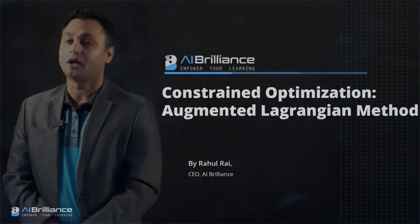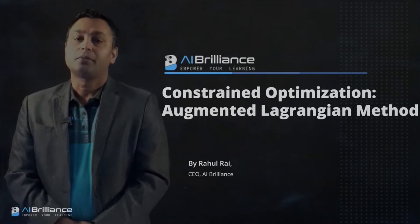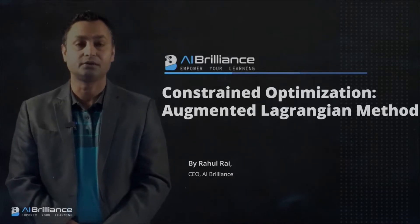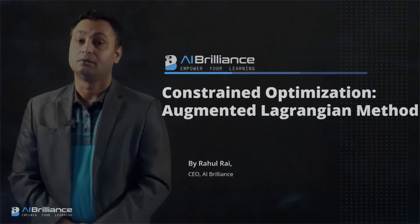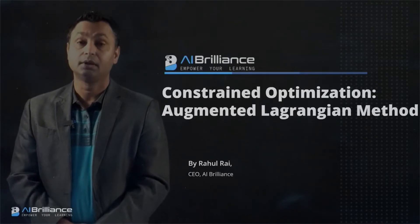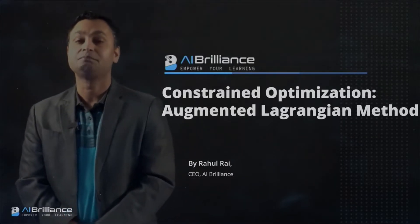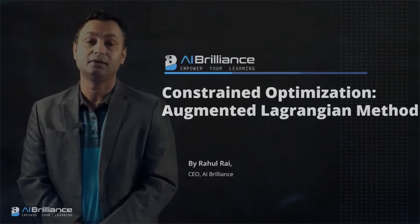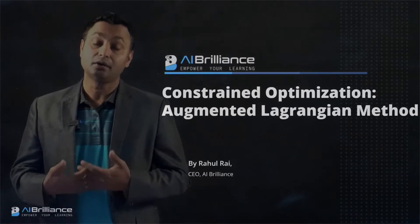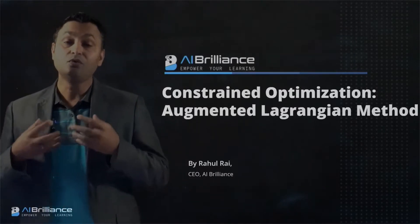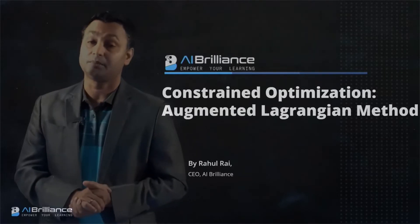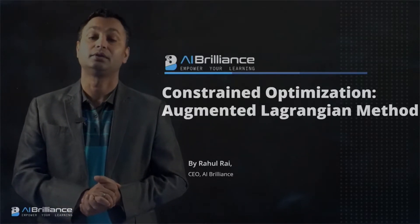Welcome to Lecture 9 of the Optimization course. Prior to this lecture, we have covered several important concepts. In the last couple of lectures, we focused on single variable and multiple variable unconstrained optimization problems, and we learned about algorithms like gradient descent, which is very useful in machine learning, and also Newton's method. Today we will expand on that knowledge by moving from unconstrained to constrained optimization problems, which are a more general class of problems.